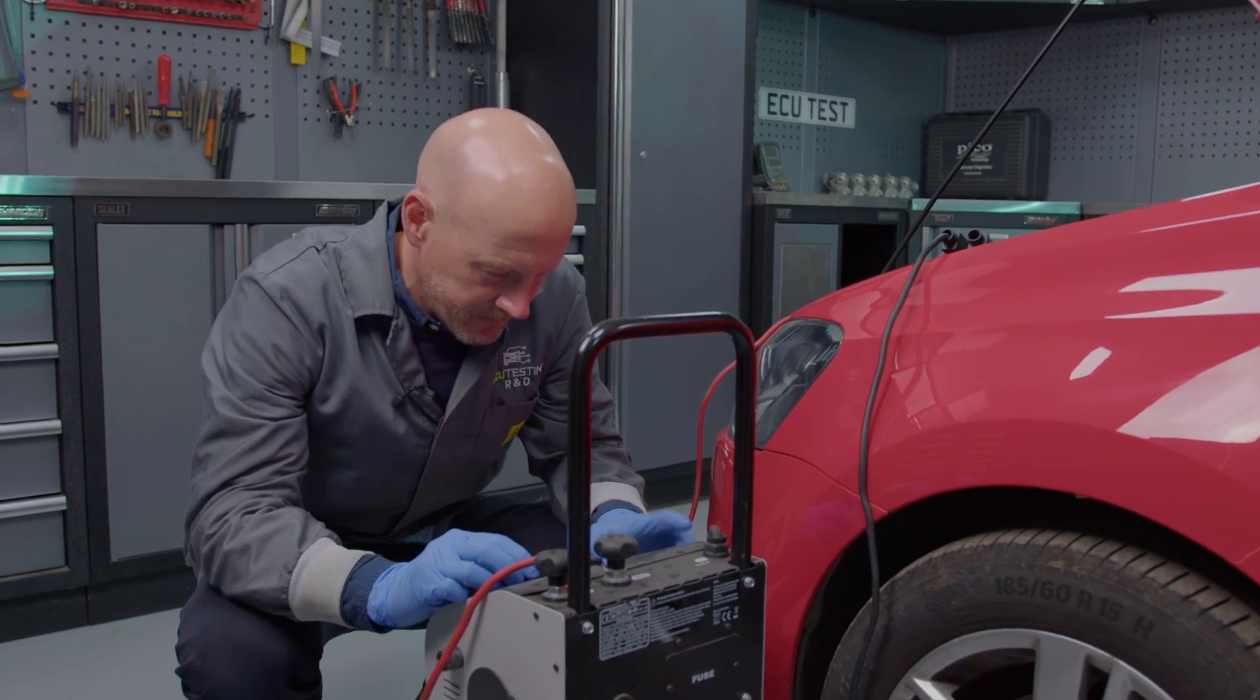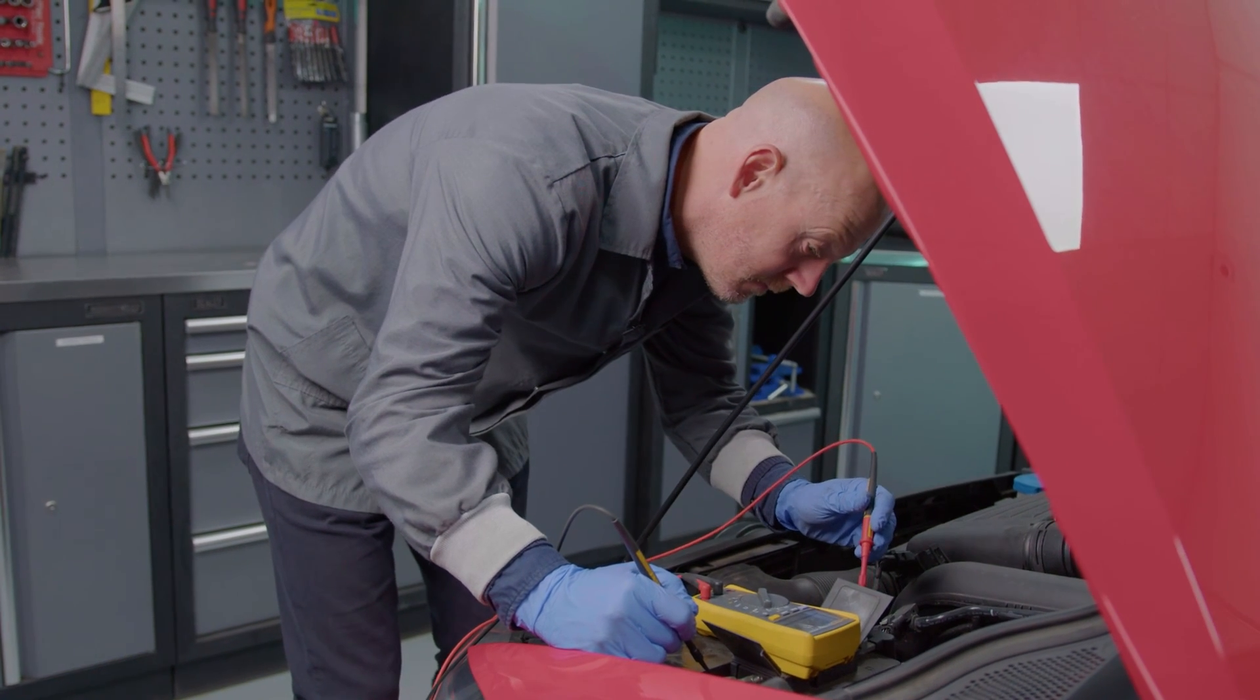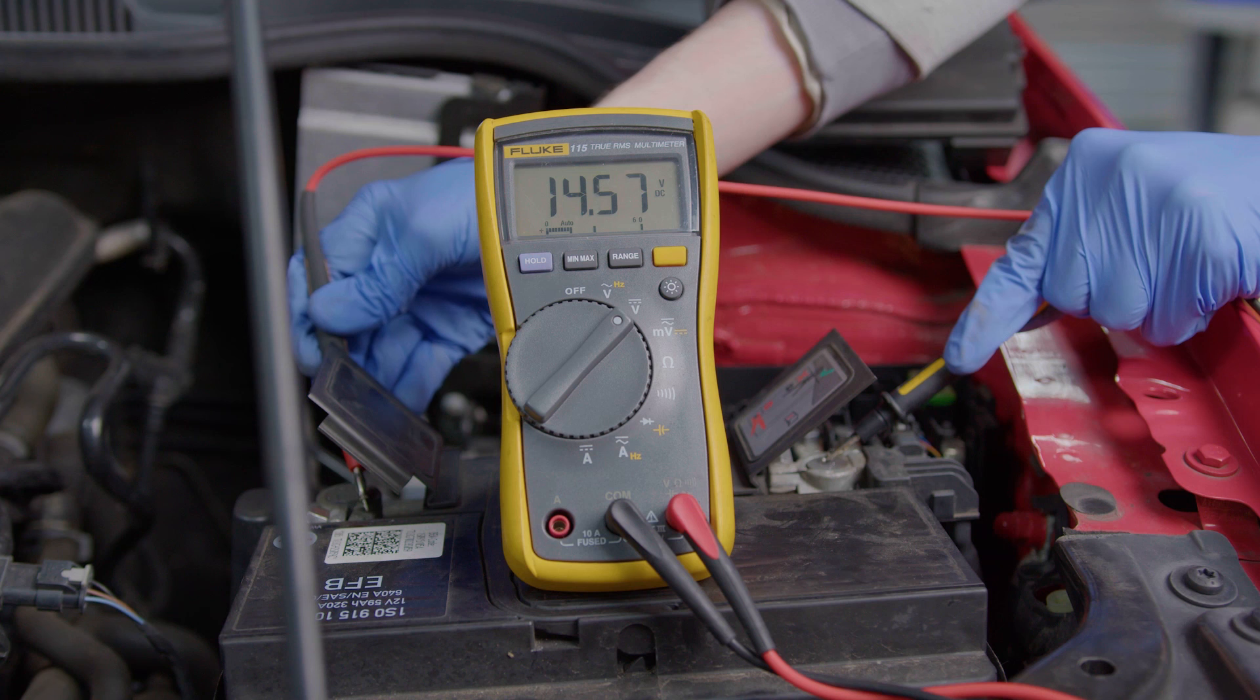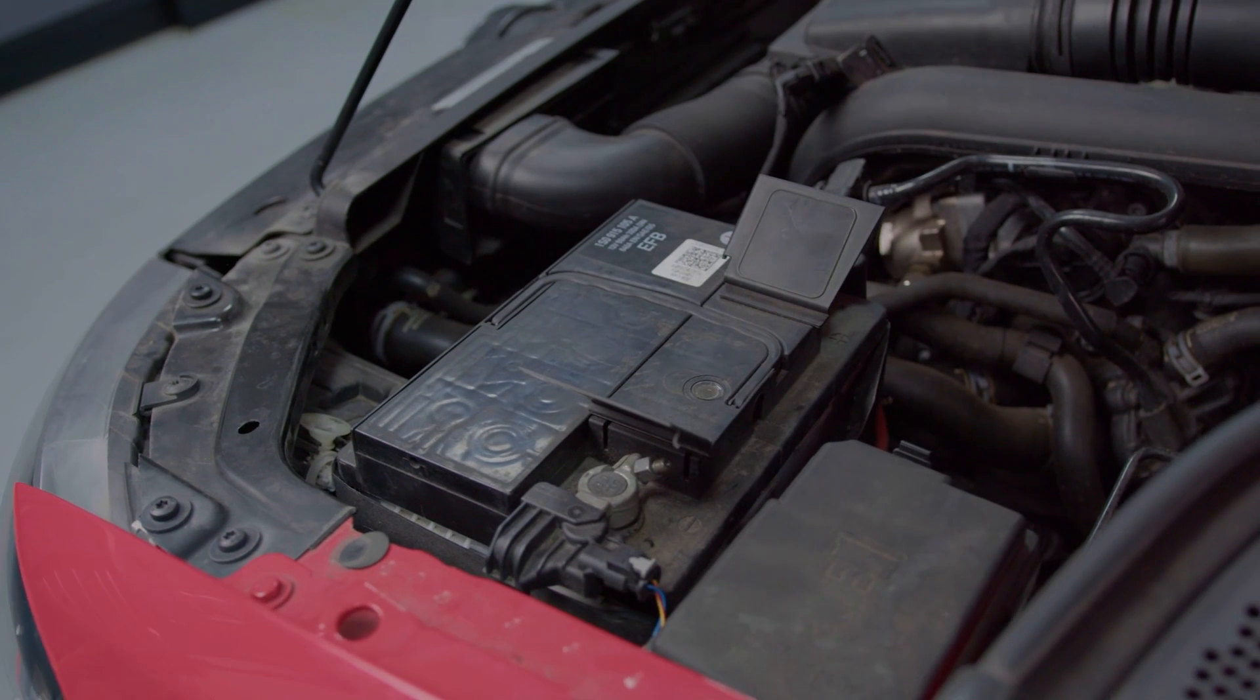In smart charging systems the battery charge rate varies so if you are using a multimeter with the vehicle running be aware the voltage reading can vary between 13 and 16 volts but this doesn't mean the charging system is faulty.